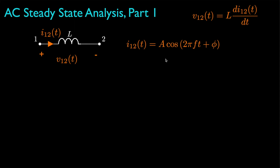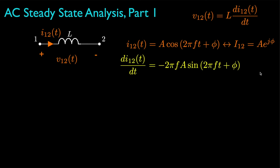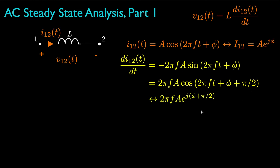For the special case when the current through the inductor is sinusoidal with frequency f, and the corresponding phasor representation I12 has amplitude A and phase phi, the derivative will be equal to negative 2πf times A times the sine of 2πft plus phi. This can be converted to a cosine by removing the minus sign and adding a phase shift of π/2, or 90 degrees. The corresponding phasor will then have an amplitude equal to 2πfA and a phase equal to phi plus π/2, which we can write as 2πf times e^(jπ/2) times the original phasor for the current.